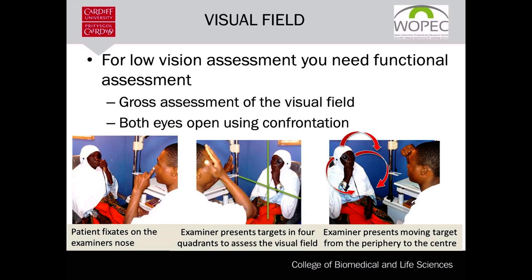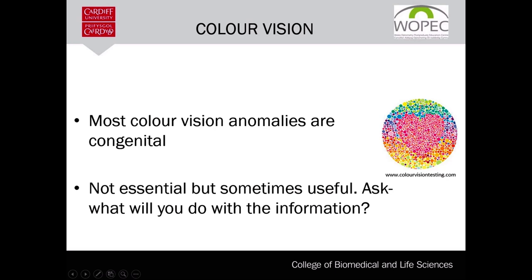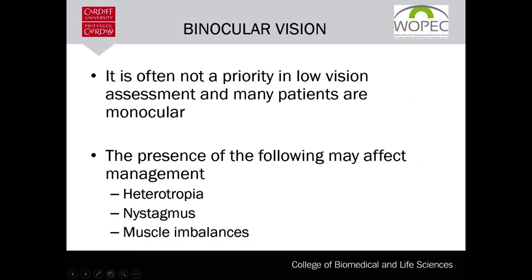Color vision anomalies often occur with macular or optic nerve conditions. It is not essential to test but may provide information on the type of filter to prescribe to your client. Binocular vision is often absent in people with moderate to severe visual impairment; however, the presence of nystagmus, heterotropia, and muscle imbalances may affect management. For instance, nystagmus may call for the use of amber filters, while heterotropia may require prisms, especially when a deviated eye retains some useful vision.